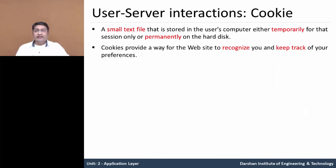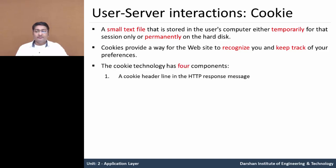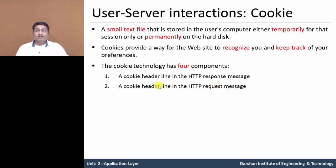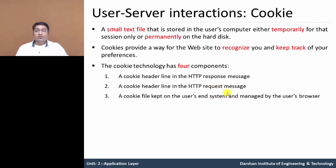A cookie can contain four parts — we can say a cookie has four components. First, a cookie header line in the HTTP response message. Second, a cookie header line included in the HTTP request message. Third, a cookie file kept on the user end system, managed by the user's browser. Fourth, a backend database at the website server, which stores the cookie ID.